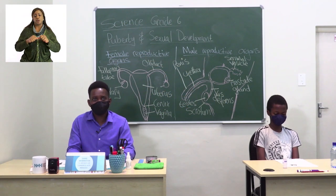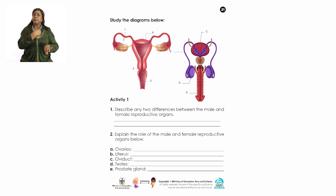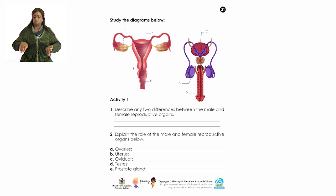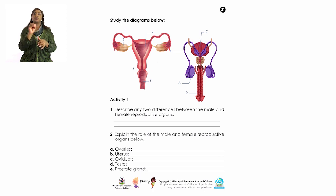Let us now turn to page 21, where we have Activity 1. Study the diagrams provided and complete the activity in reference to today's lesson. At number one, describe any two differences between the male and female reproductive organs. At number two, explain the role of the following: A — ovaries, B — uterus, C — oviduct, D — testis, and E — the prostate gland.